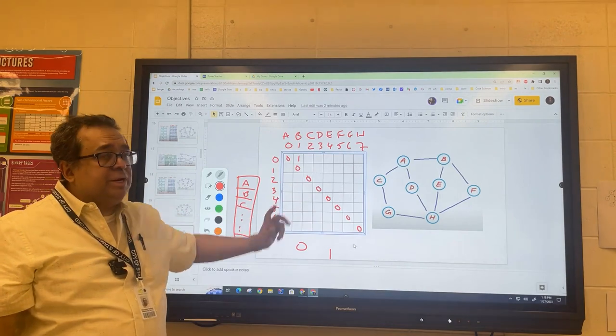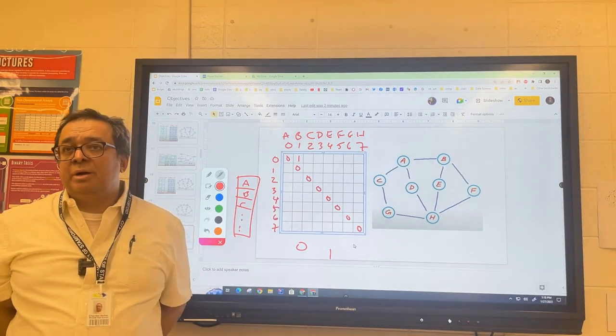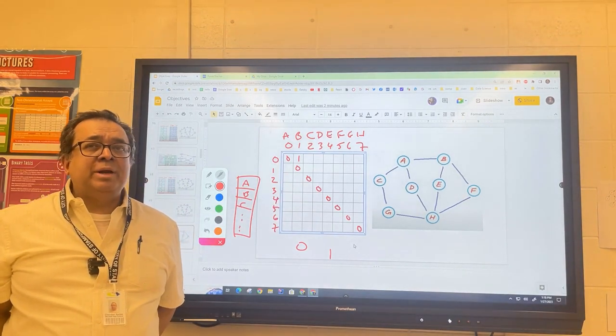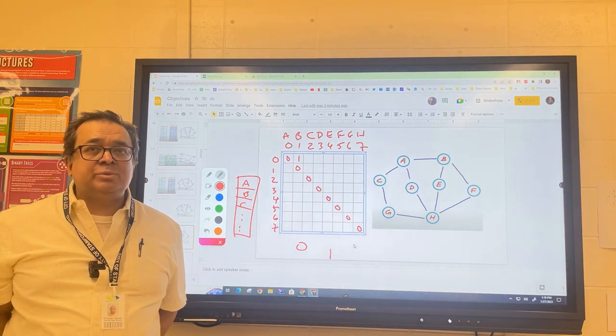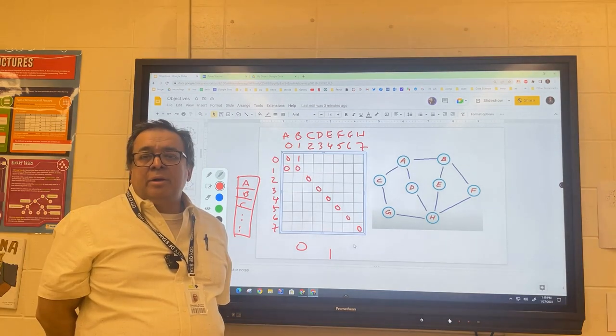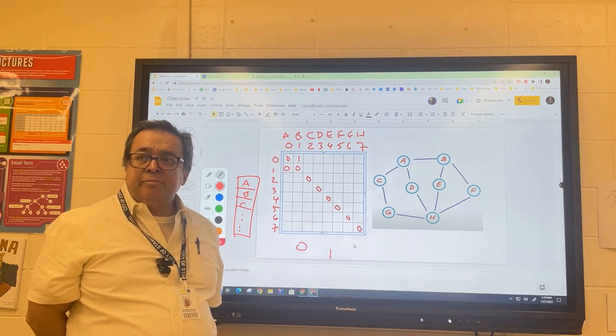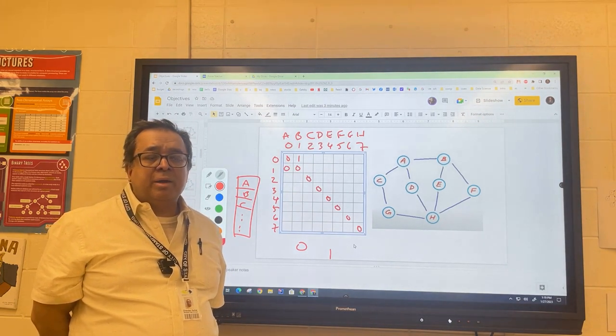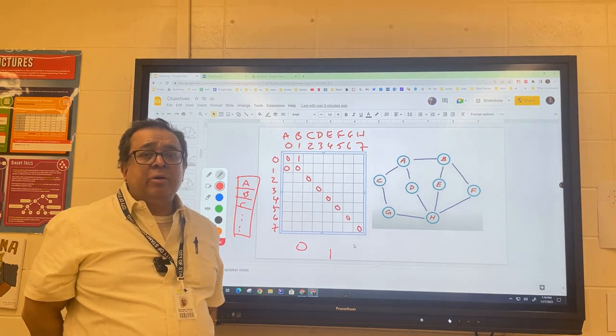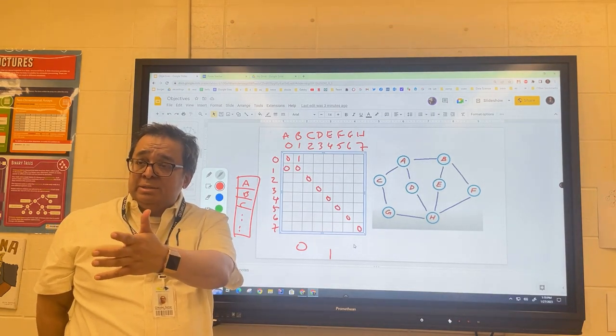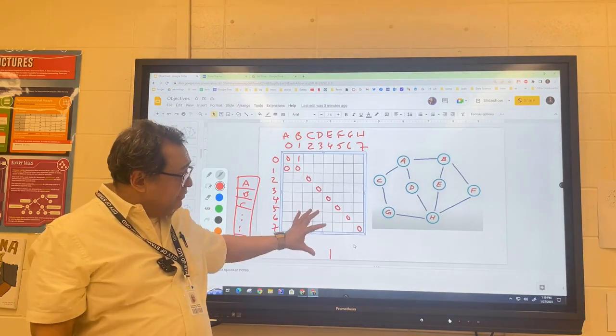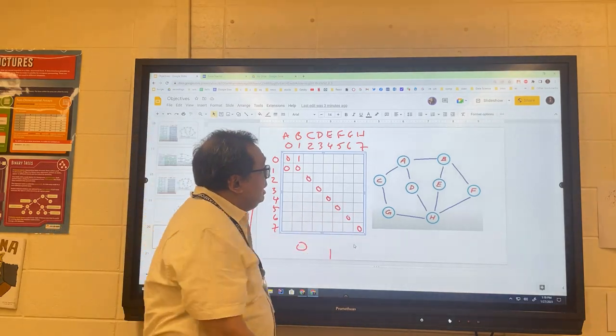Will this matrix be symmetric or not? What would it mean if it wasn't symmetric? What kind of graph would we have if the matrix was not symmetric? Miss Olivia, what am I looking for? It would be directed.